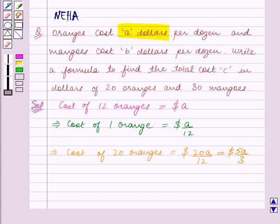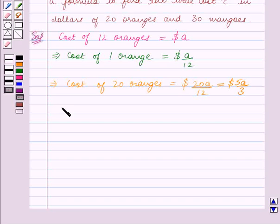We are also given that the cost of one dozen of mangoes is B dollars. So cost of 12 mangoes is equal to B dollars.